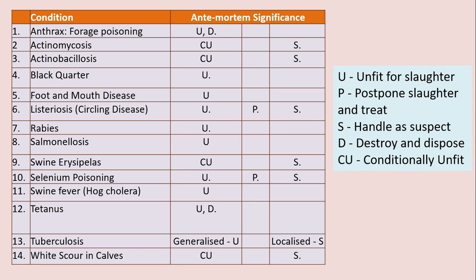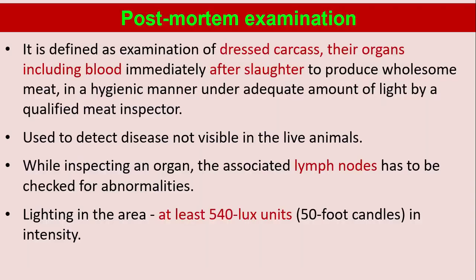In this chart, U represents unfit for slaughter, P represents postpone slaughter and treat, S represents handle as a suspect, D represents destroy and dispose, and CU means conditionally unfit.